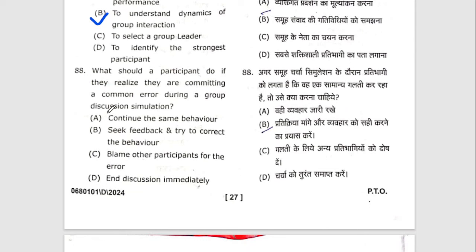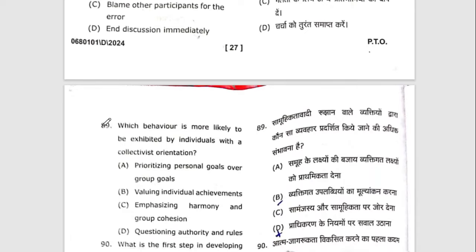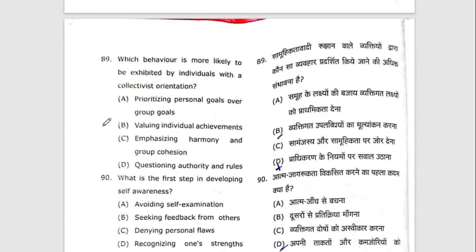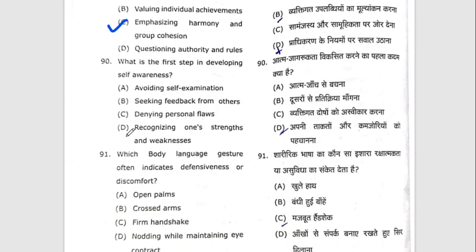Eighty-seventh question: the right option is B — to understand the dynamics of group interaction. Eighty-eighth question: what should a participant do if they realize they are committing a common error during a group discussion? The right option is B — seek feedback and try to correct the behavior. Ninetieth question: which behavior is more likely to be exhibited by an individual with self-awareness? The right option is D — recognizing one's strengths and weaknesses.